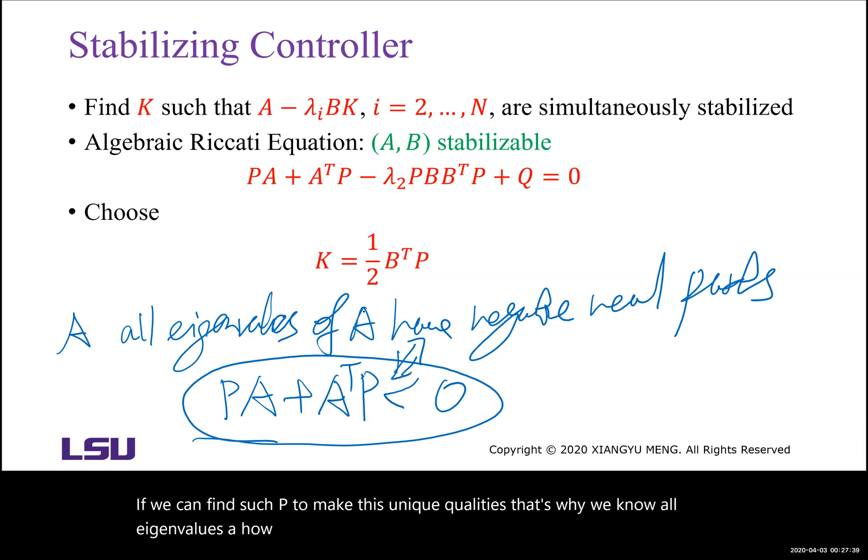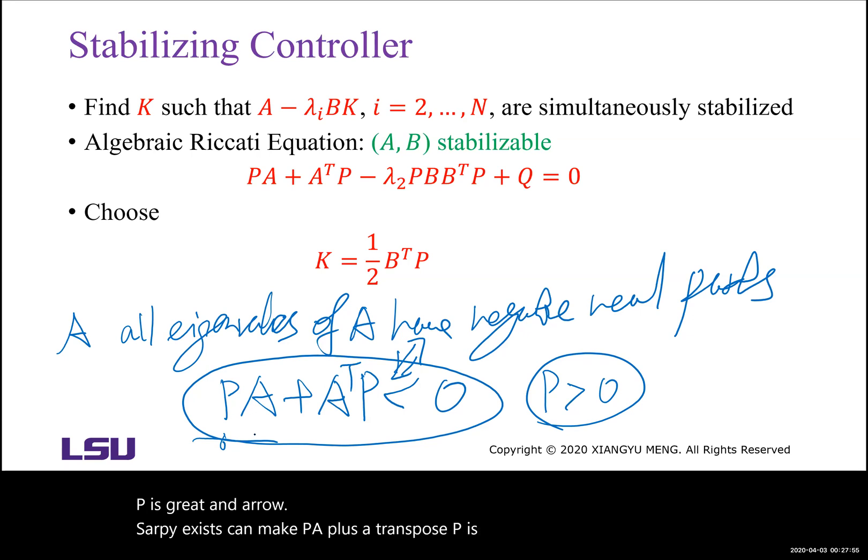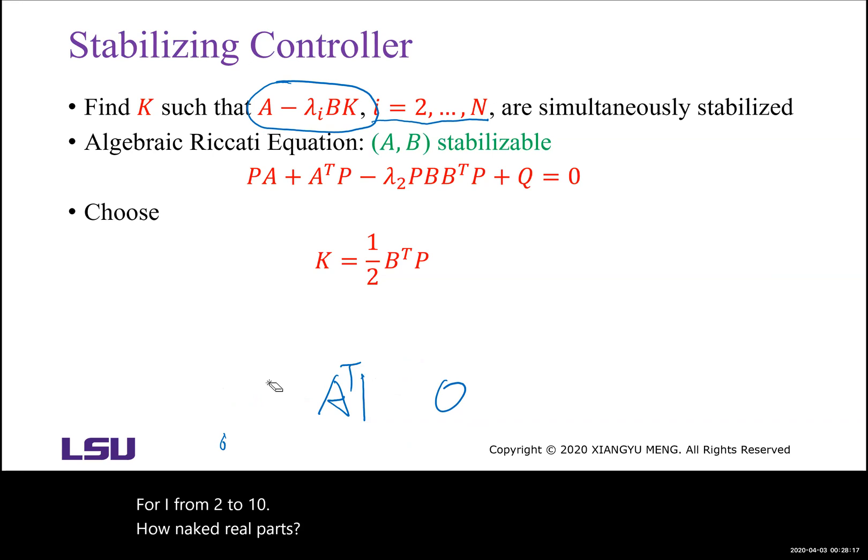If all eigenvalues of A have negative real parts, such P greater than 0 exists and can make PA plus A transpose P less than 0. Now we are using this result to verify that all eigenvalues of A minus lambda i BK for i from 2 to N have negative real parts.